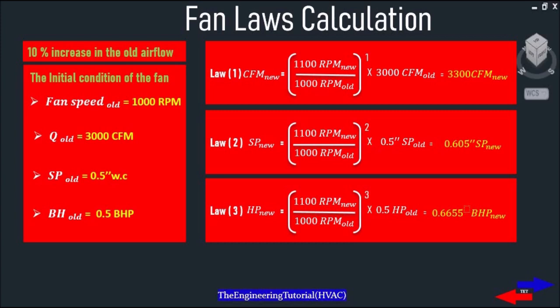First, CFM new equals 1100 RPM new divided by 1000 RPM old, multiplied by 3000 CFM old, which equals 3300 CFM new.